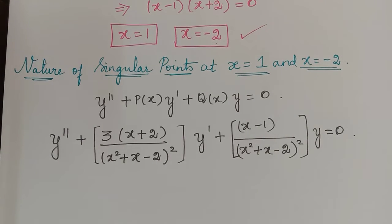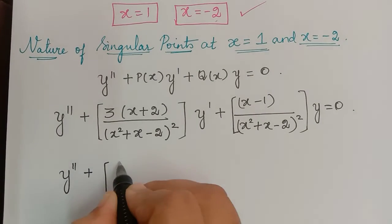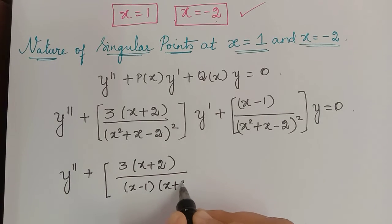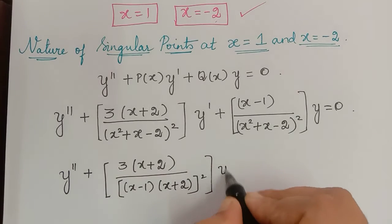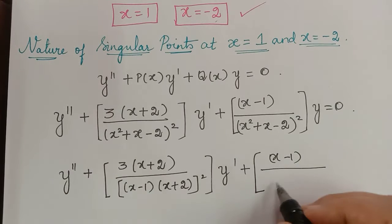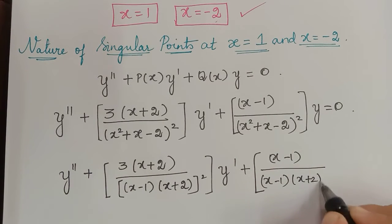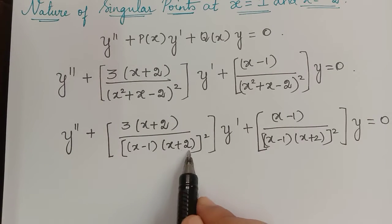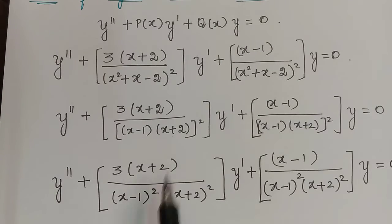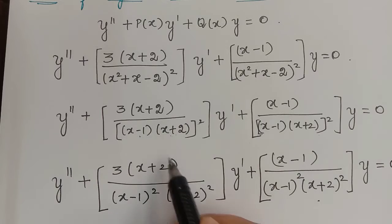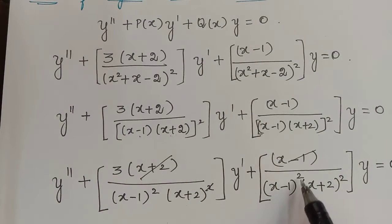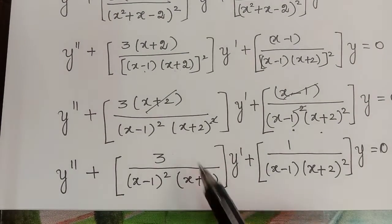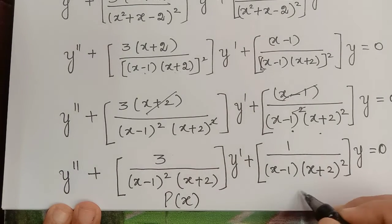After dividing, this can be factorized and written as y'' + [3(x + 2)] / [(x - 1)(x + 2)²] · y' + [(x - 1)] / [(x - 1)(x + 2)²] · y. Taking the square for each term in the denominator and cancelling common factors, we obtain the simplified equation after cancelling the terms.